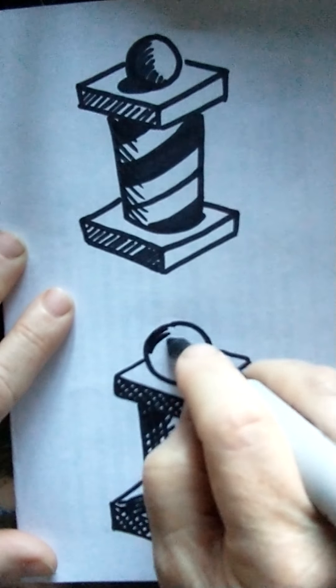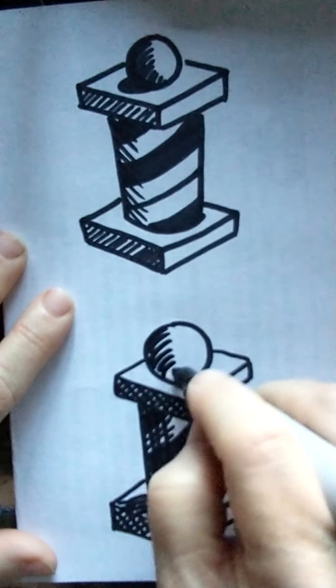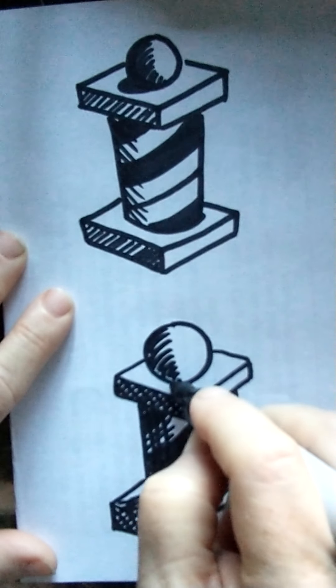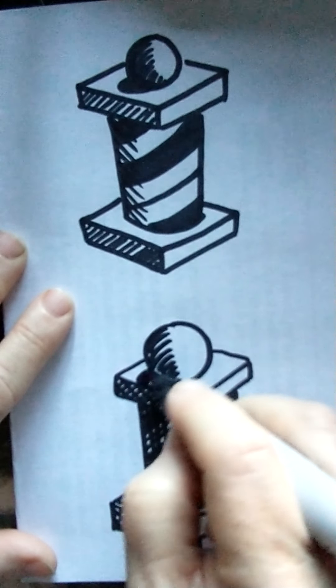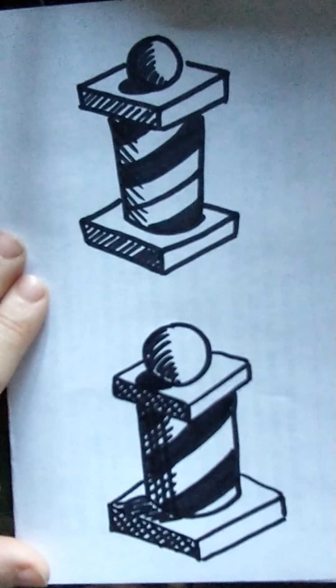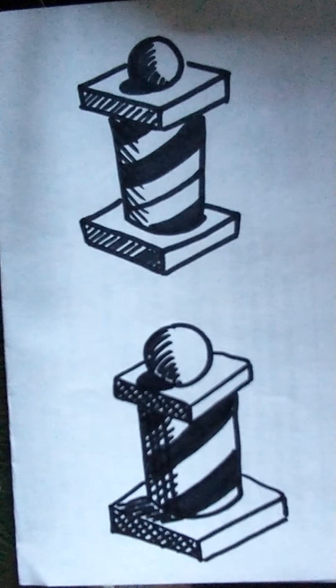And then there'd be one side of the ball on top that couldn't get light. And it would have a shadow behind it, too. So there is a barber's pole with some cross hatching and some shading.